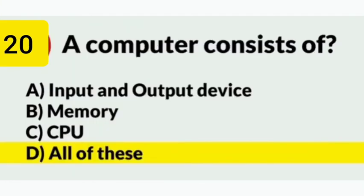Number 20. A computer consists of what? Answer is option D: All of these — that means input and output devices, memory, and also CPU.